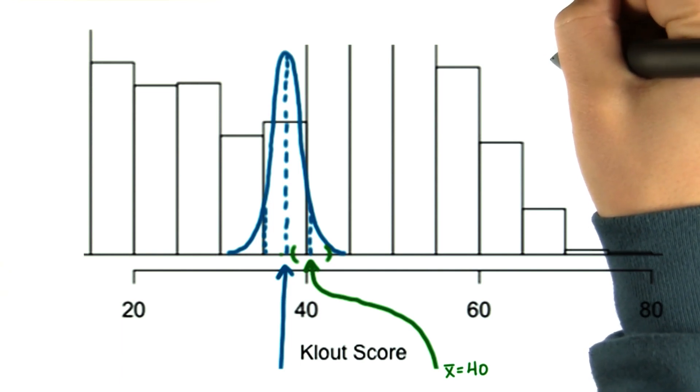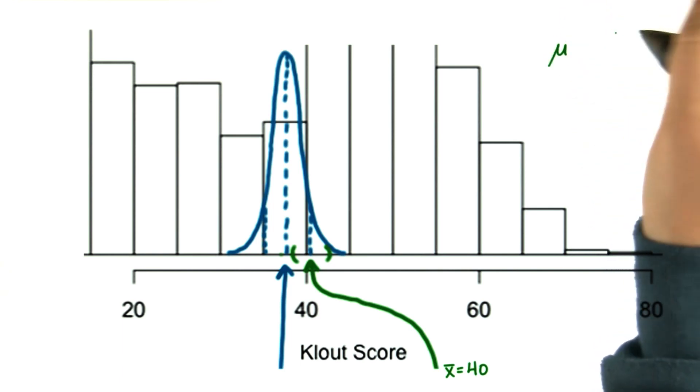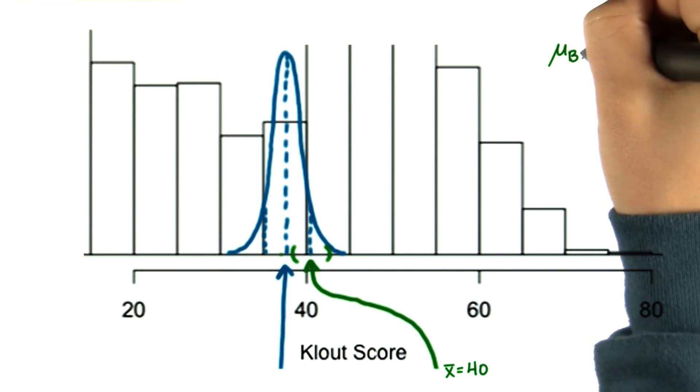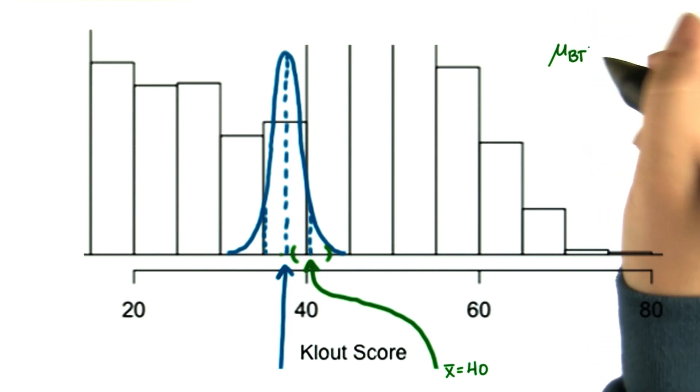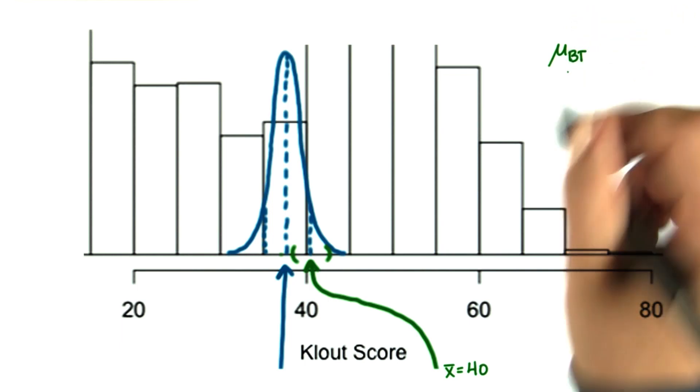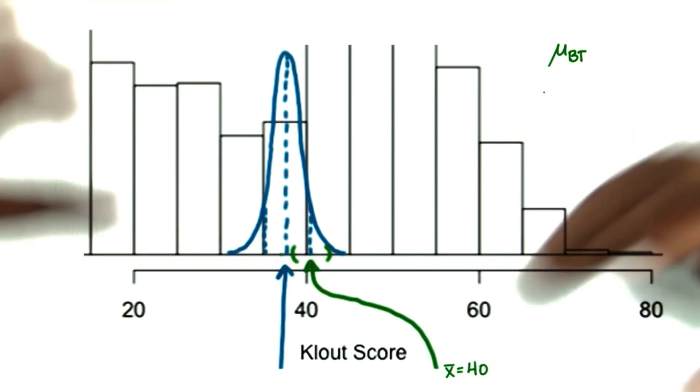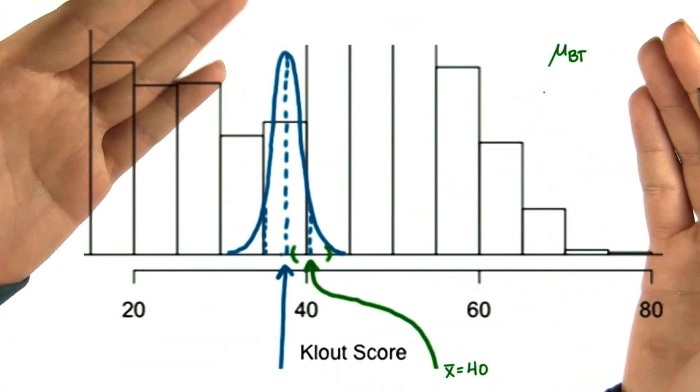So in other words, we have this new predicted population mean. We'll call it mu sub bt for Bieber tweeter. Our best guess for this is 40, but it'll be within an interval around 40 most likely.